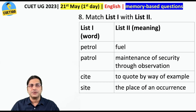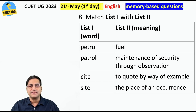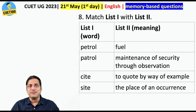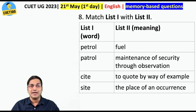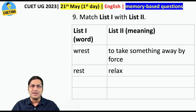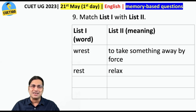Match the following — patrol and petrol, cite and site. Have you watched the serial Crime Patrol? Petrol is of course fuel. Patrol is the maintenance of security through observation. 'Cite' means to quote by way of example — like I am citing many questions here. 'Site' is the place of an occurrence — again, crime scene. Unfortunately we have not been able to recollect the remaining two words of this match-the-following question.